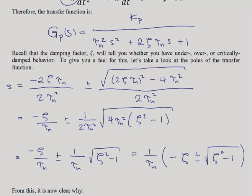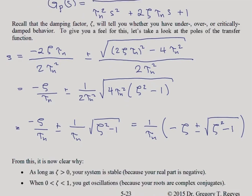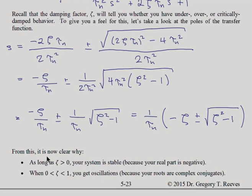Okay, so these are the poles of our transfer function when you have a second order system. Now, what do you see here? The first thing that you can see is that as long as zeta is greater than 0, your system is stable.